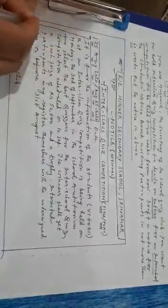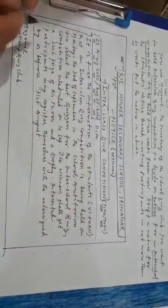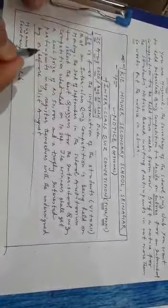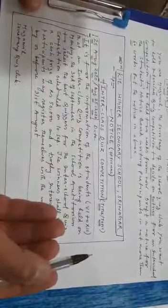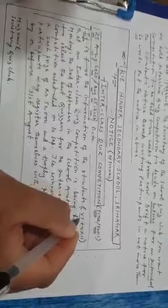This is the content of the notice, very important. Now in this content we'll put those points which we discussed in part one. Now see, the notice writer has not written, I inform all the students. No. He has written, it is informed. That means you start with the third person, it. It is for the information, or it is informed, or it is intimated to all the students, or it is for the information of all the students. In the brackets, he has mentioned which class students.